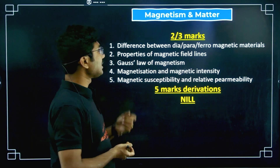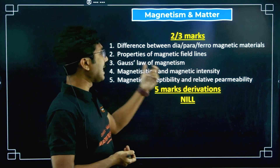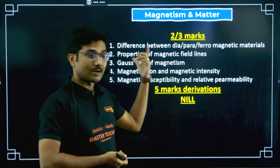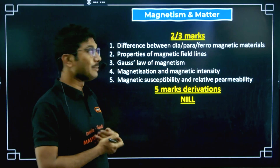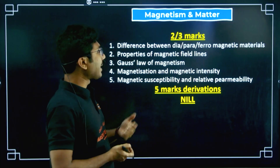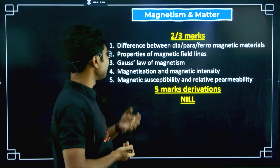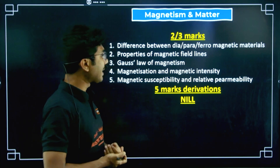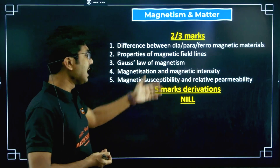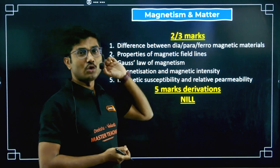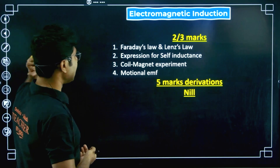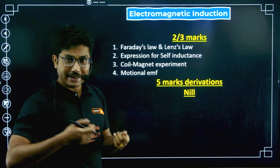Magnetism and Matter: the difference between diamagnetic, paramagnetic, and ferromagnetic materials is important. If you have followed my lectures, I covered this in one single table — if you remember that table you can answer this question. Properties of magnetic field lines, Gauss's law of magnetism, magnetization, magnetic intensity, magnetic susceptibility, and relative permeability are key topics. There are no five-mark derivations and no numerical questions from this chapter, making it an easy theoretical chapter.